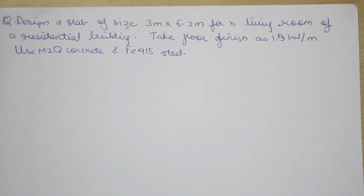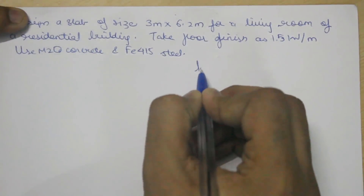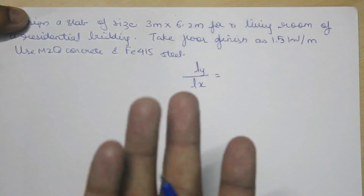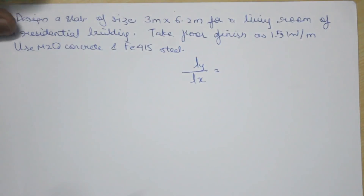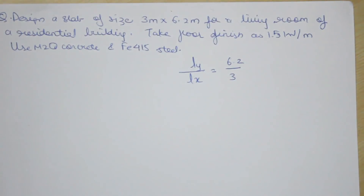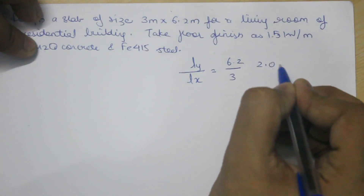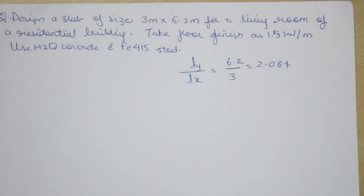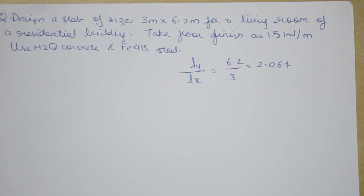The basic criteria for determining the type of slab is the aspect ratio, which is given as Ly divided by Lx — the longest span divided by the shorter span. In this case, the longest span is 6.2 meters and the shorter span is 3 meters, giving an aspect ratio of approximately 2.067. If the aspect ratio is greater than 2, it is a one-way slab; if less than 2, it is a two-way slab.